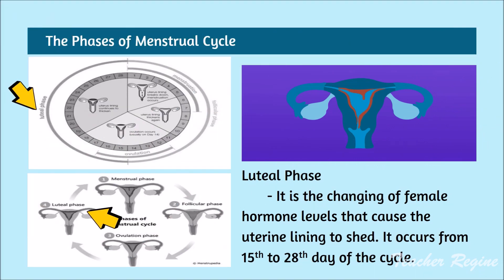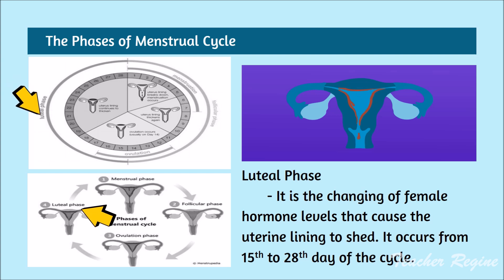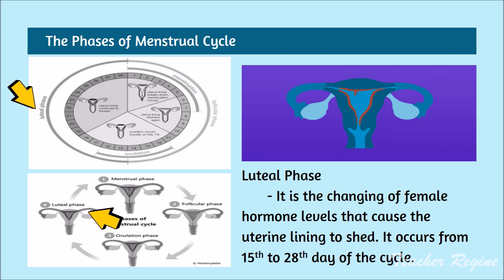Luteal phase: it is the changing of female hormone levels that causes the uterine lining to shed. It occurs from the 15th to the 28th day of the cycle.